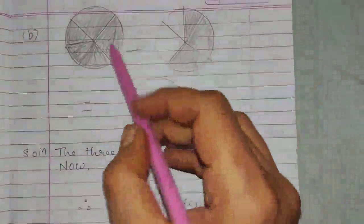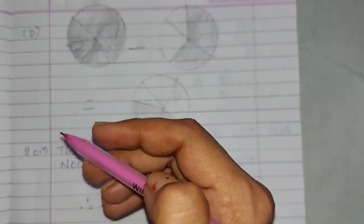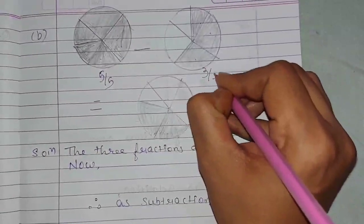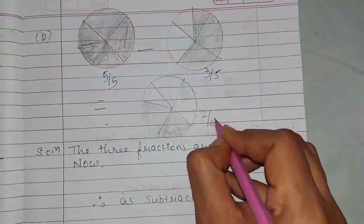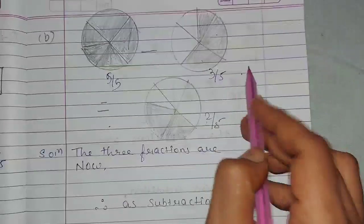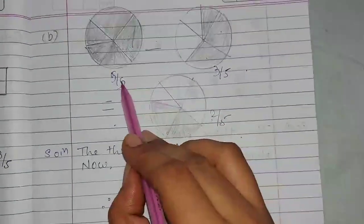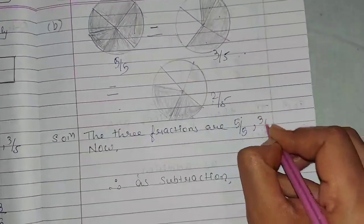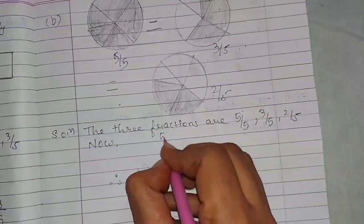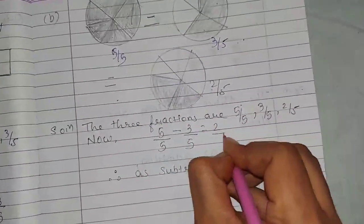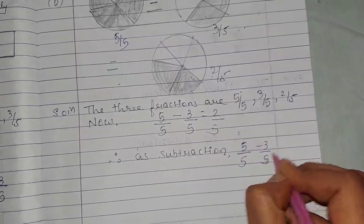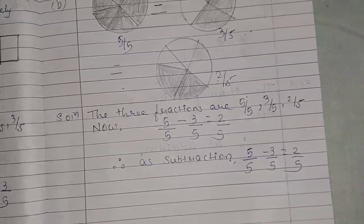Now number B figures. In number B, inside the circle there are 1, 2, 3, 4, and 5 parts. The first one has the entire circle shaded, so 5 upon 5. The second figure has 3 parts shaded, so 3 upon 5, and the third has 2 parts shaded, so 2 upon 5. So 5 upon 5 minus 3 upon 5 equals 2 upon 5. Since 5 minus 3 equals 2, the subtraction sign comes. Therefore, as subtraction: 5 upon 5 minus 3 upon 5 equals 2 upon 5.